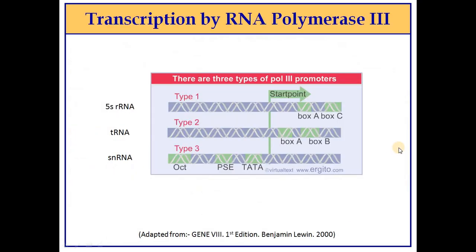For RNA polymerase 3, there are three different types of promoters. For 5S rRNA, the promoter elements — box A and box C — are present downstream of the start site. For small nuclear RNAs, the promoter is present upstream of the transcription start site. For tRNA, similar to 5S rRNA, the promoter regions are present downstream of the transcription start site.